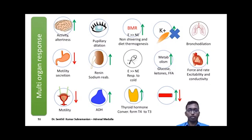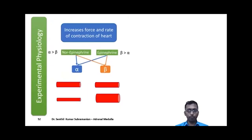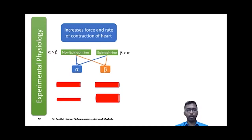The action of catecholamines on blood vessels can be either vasoconstriction or vasodilation. In experimental scenarios, alpha receptor activation causes vasoconstriction, while beta receptor activation leads to vasodilation. Both norepinephrine and epinephrine can act on either receptor type. However, norepinephrine has greater affinity for alpha receptors, so its net effect is vasoconstriction. Epinephrine has greater affinity for beta receptors, so in experimental conditions it can cause vasodilation.